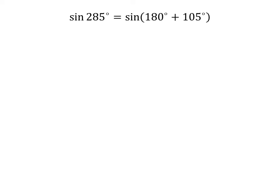285 degrees is equal to 180 degrees plus 105 degrees, so sine of 285 degrees is equal to sine of 180 degrees plus 105 degrees. We know the trigonometric identity: sine of 180 degrees plus A is equal to minus sine of A.